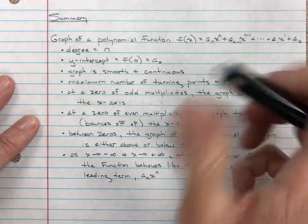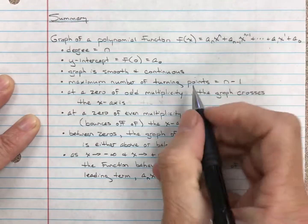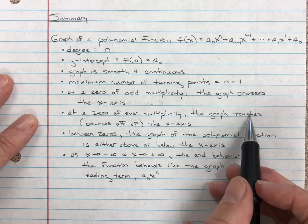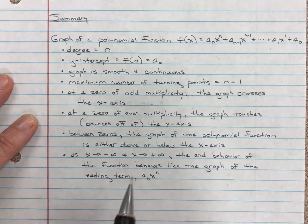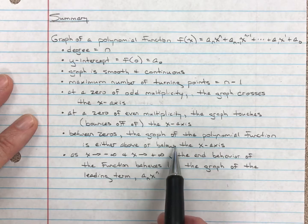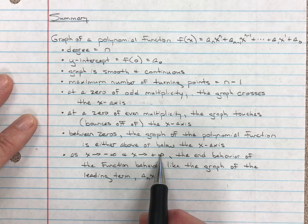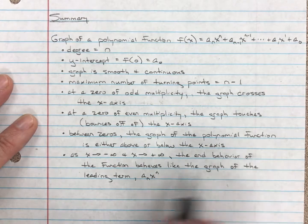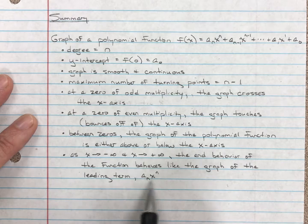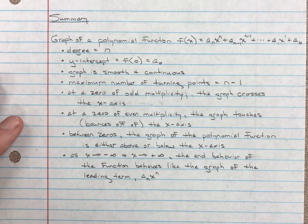At a zero of odd multiplicity, the graph crosses the x-axis. At a zero of even multiplicity, the graph touches — it bounces off — and does not cross. Between zeros, the graph is either above or below the x-axis. Finally, as x goes to negative infinity or positive infinity, the end behavior behaves exactly the same way as the graph of the leading term, which is a power function. We'll take a deeper look in future video lectures and then get into how we solve these things.